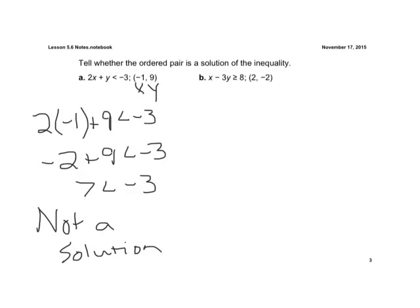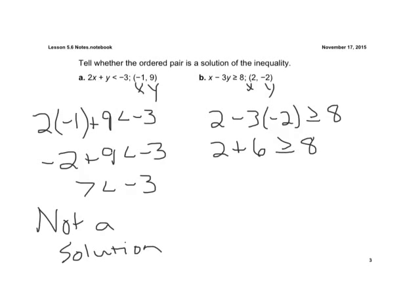Let's look at part b. Plug in 2 for x and negative 2 for y. So we have 2 minus 3 times y, which is negative 2, greater than or equal to 8. See if this is true. Negative 3 times negative 2 is positive 6. 2 plus 6 is 8, so we have to ask ourselves: is 8 greater than or equal to 8? It's not greater than, but it is equal to. So that is true, so it's a solution.